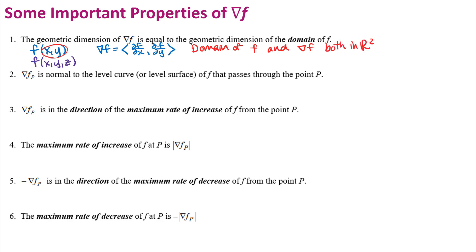Similarly, if I have a function of three variables, f(x, y, z), our gradient vector would have three components. So both the domain of the function and the gradient vector would be in R³. This will be important when you sketch the gradient vector, so that you can think about where you want to sketch it. Often we draw the gradient vector on the graph of the level curves.